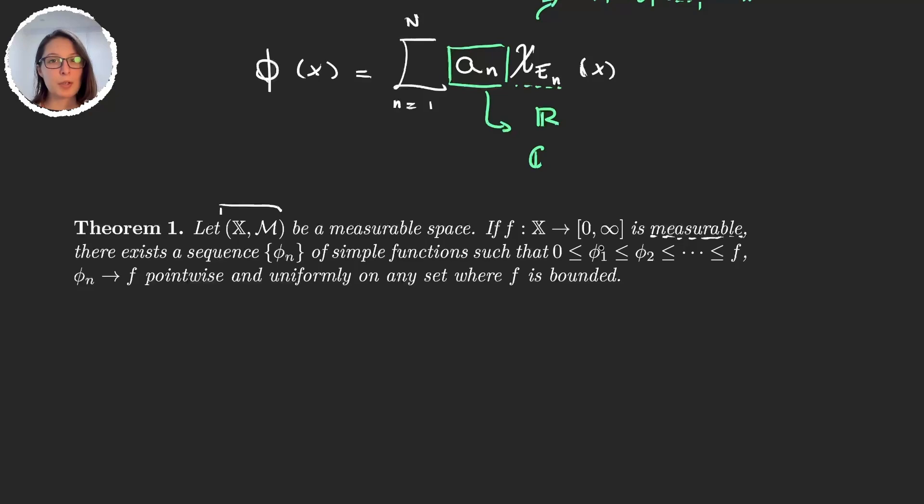The same can be done if the function is negative, that is measurable. So if you don't remember some of these concepts, I recommend you check out our previous videos in the reproduction list. What the theorem says is that there exists a sequence {φₙ} of simple functions that are increasing, so each function is smaller than the next one, and all of them are smaller than f and they're all positive.